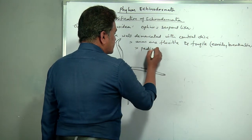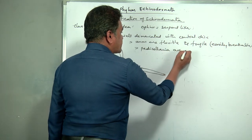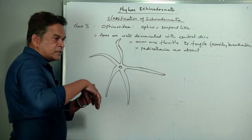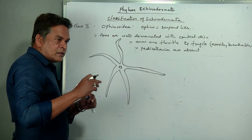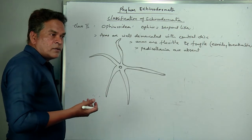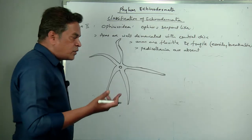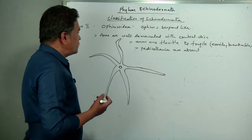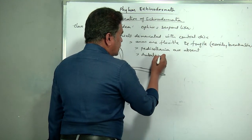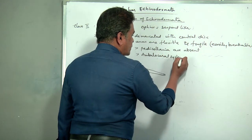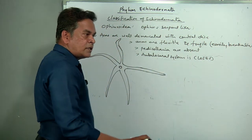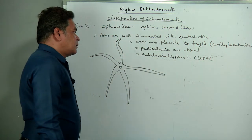Pedicellaria is absent in Ophiuroidea because when arms are flexible, there is no chance of deposition of debris, so pedicellaria is not required. The ambulacral system is closed, and tube feet are without suckers. Arms are flexible and show a lashing serpentine-like movement — hence the name Ophiuroidea.